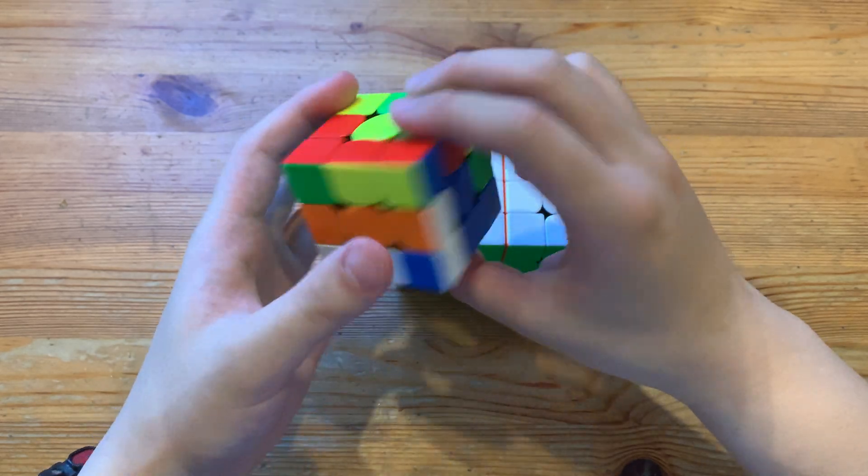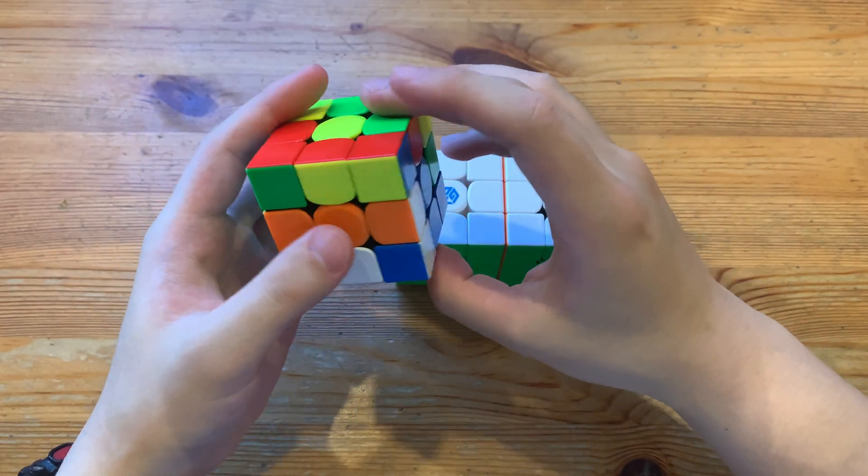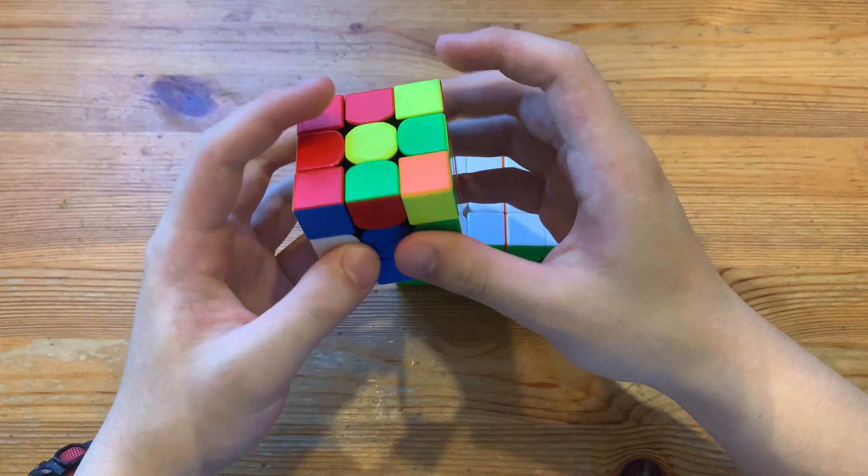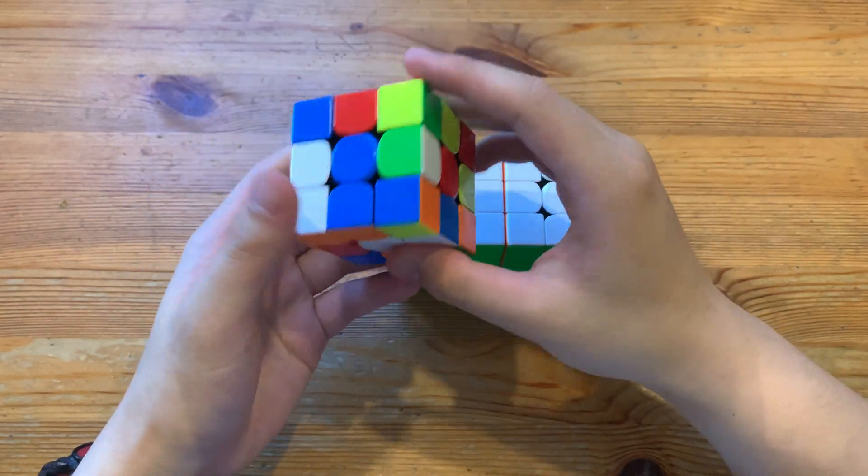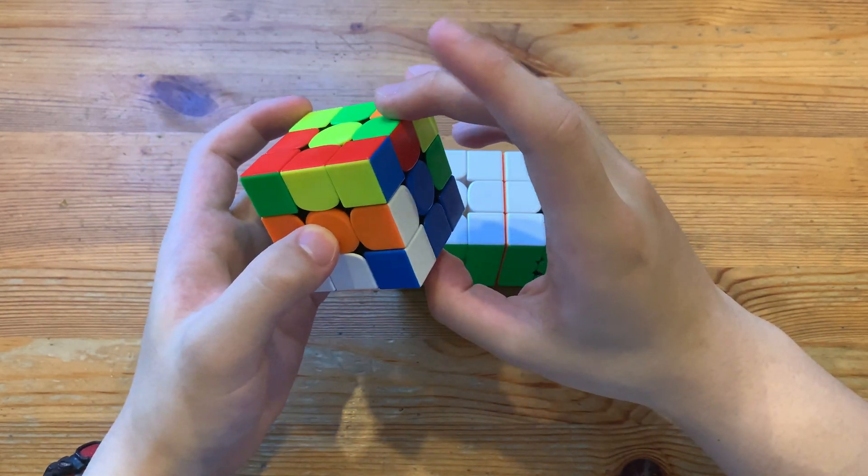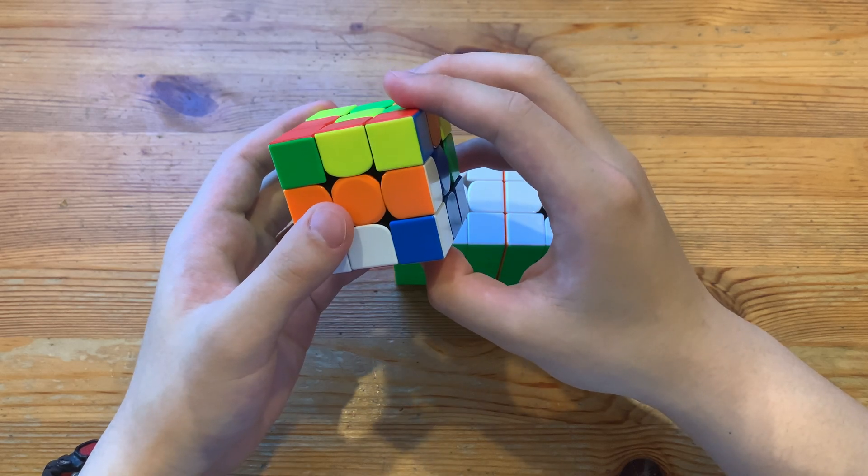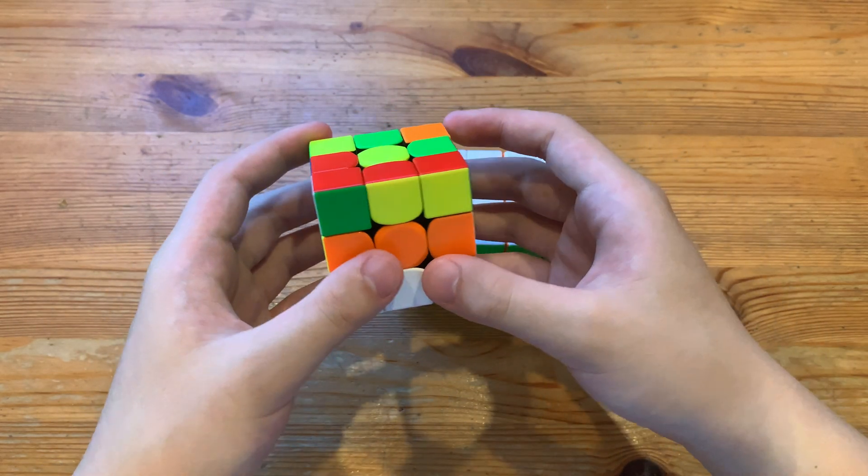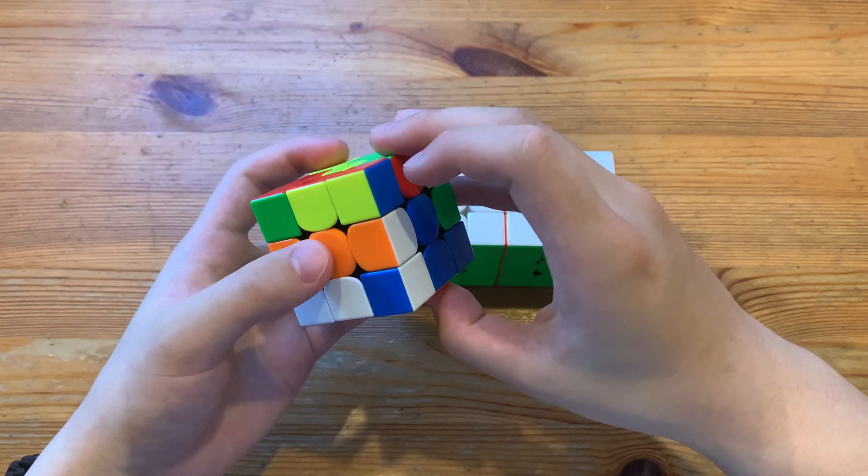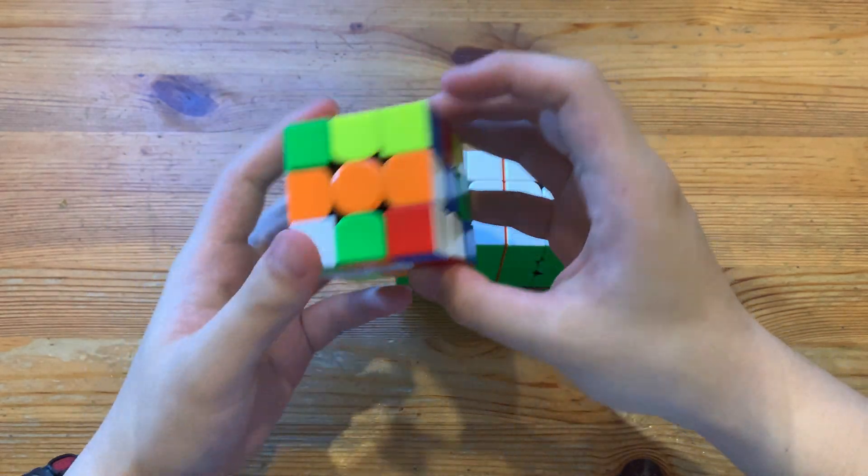So, solve number one. Looks like a pretty mediocre scramble. Okay, I'll just do an x cross. Doesn't actually seem to be that bad, so we'll just do d, put this over here.